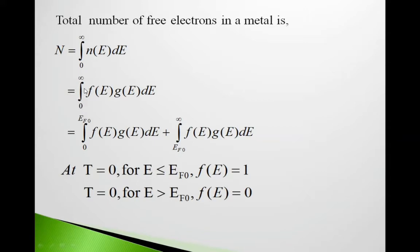This equals ∫₀^∞ f(E)g(E)dE = ∫₀^(EF0) f(E)g(E)dE plus ∫_(EF0)^∞ f(E)g(E)dE. This EF0 is Fermi energy at 0 degree Kelvin temperature.